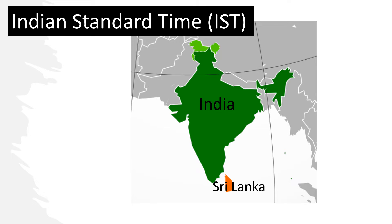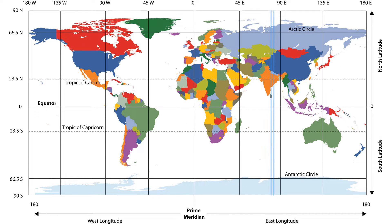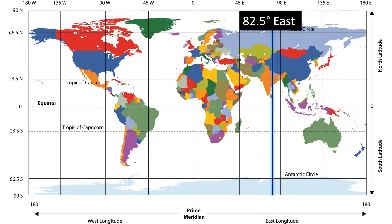IST means Indian Standard Time. Indian Standard Time is the time observed throughout India and Sri Lanka. The longitude for Indian Standard Time is considered around 82.5 degrees east,